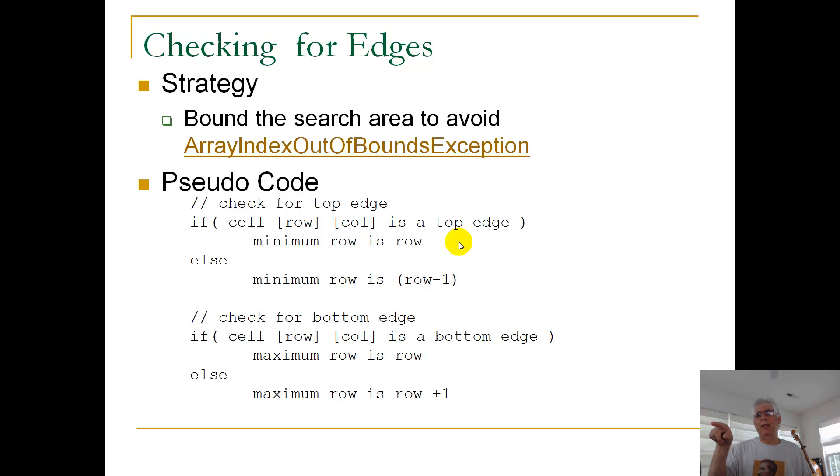And we looked at the row immediately underneath, row plus 1. If I'm on the top edge, I can't check in row minus 1. I'm guaranteed to get an array index out of bounds exception.